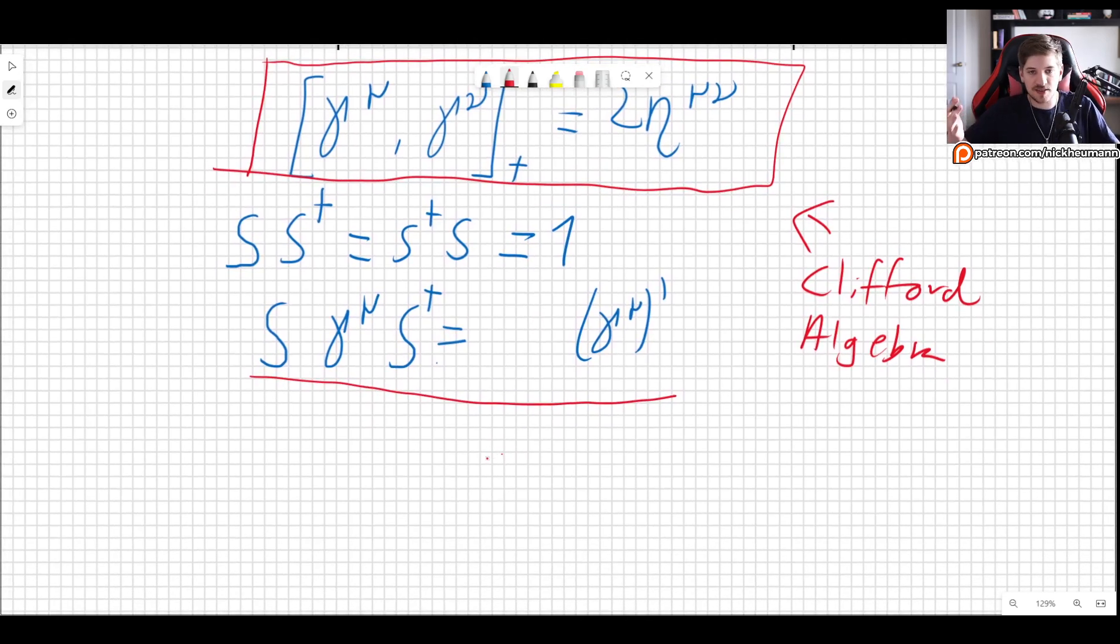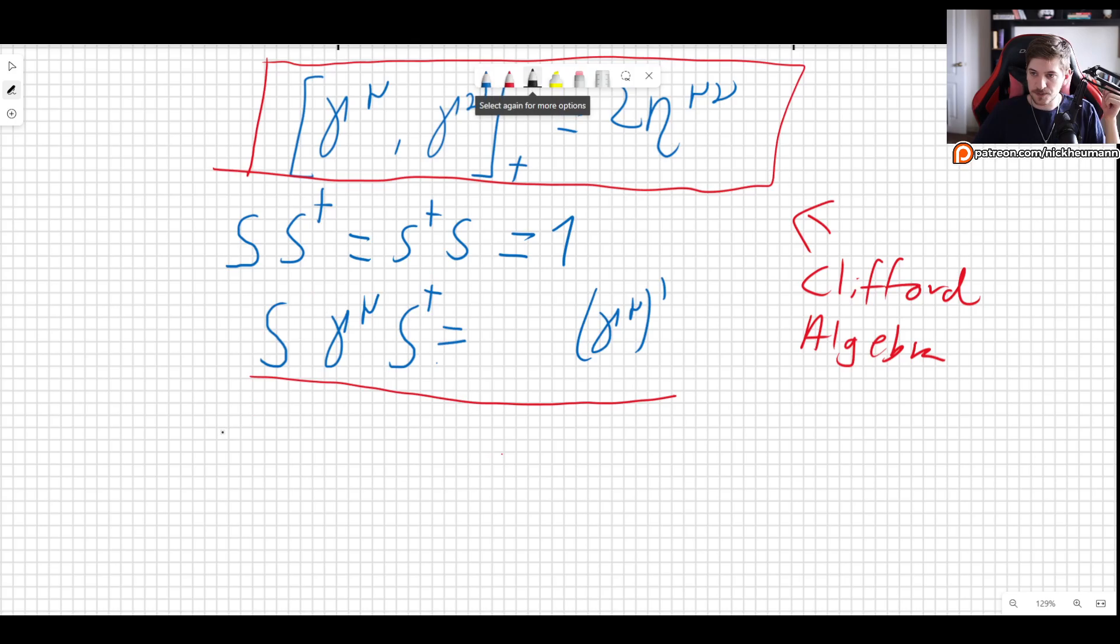So if physics is the same, then the Clifford algebra still has to hold if we are using a different representation. So let's calculate the anticommutator. Let's calculate gamma mu prime, the transformed version, the new version, gamma nu prime, and let's see what we get.